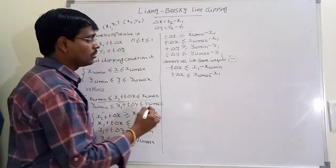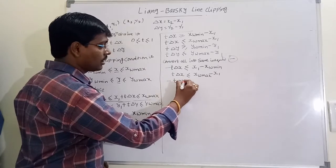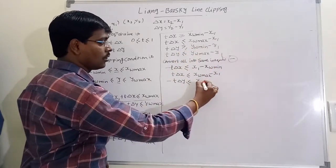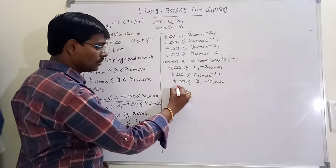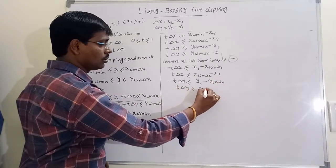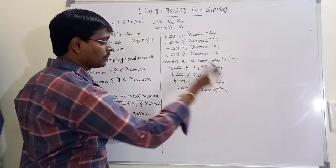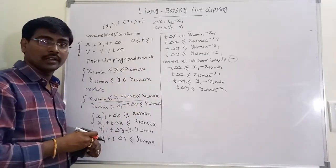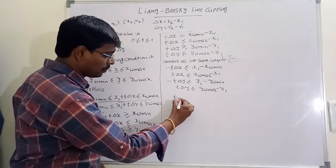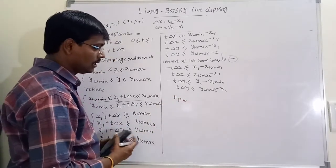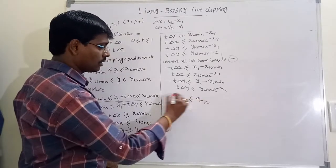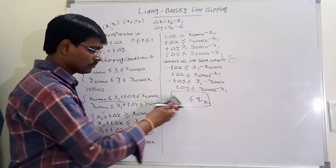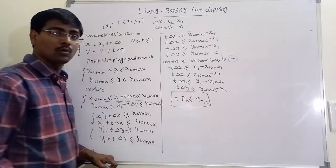All four inequalities are converted into a common formula: t·pk ≤ qk, for k = 1, 2, 3, 4. Where p1 = minus delta_x, p2 = delta_x, p3 = minus delta_y, p4 = delta_y. The corresponding q1, q2, q3, q4 values are derived from these equations.